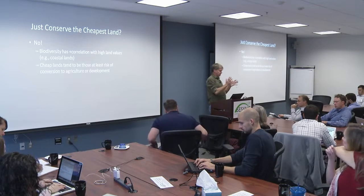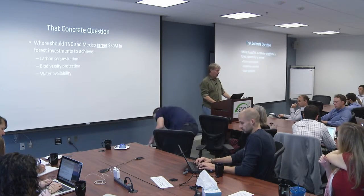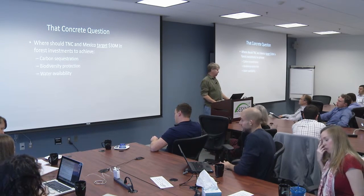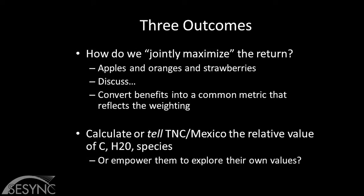Getting back to this concrete question with three objectives—how do we jointly maximize these three things? Someone mentioned: how do we weight them? These are apples and oranges and strawberries. What we'd normally do is value them, convert them into a common metric—dollars. But we're not actually going to do that here. There is an alternative to putting dollar values on things: we could convert carbon sequestration, biodiversity, and water provision into dollar values and do all your thinking for you, telling you here's what this stuff is worth in relative terms.